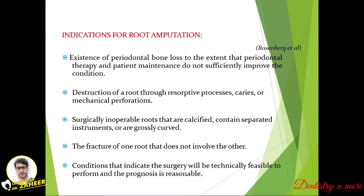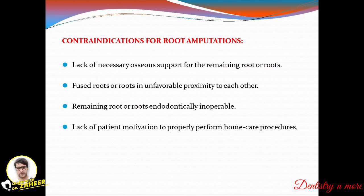Indications for root amputation include: periodontal bone loss where periodontal therapy does not sufficiently improve the condition; destruction of a root through resorptive processes, caries, or mechanical perforations; surgically inoperable roots that are calcified, contain separated instruments, or are grossly curved; and fracture of one root that does not involve the other. Contraindications are: lack of necessary tissue support for remaining roots, fused roots or roots in unfavorable proximity to each other, remaining root endodontically inoperable, and lack of patient motivation.